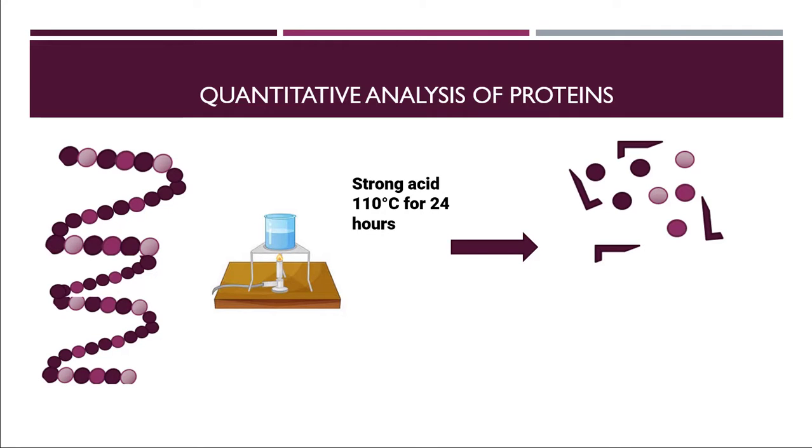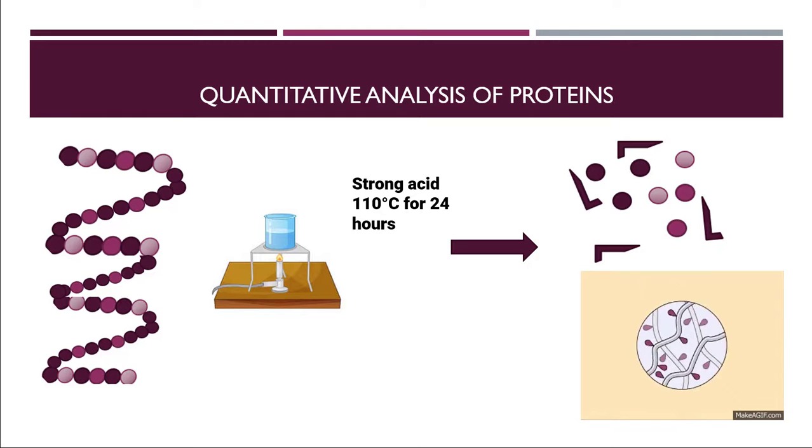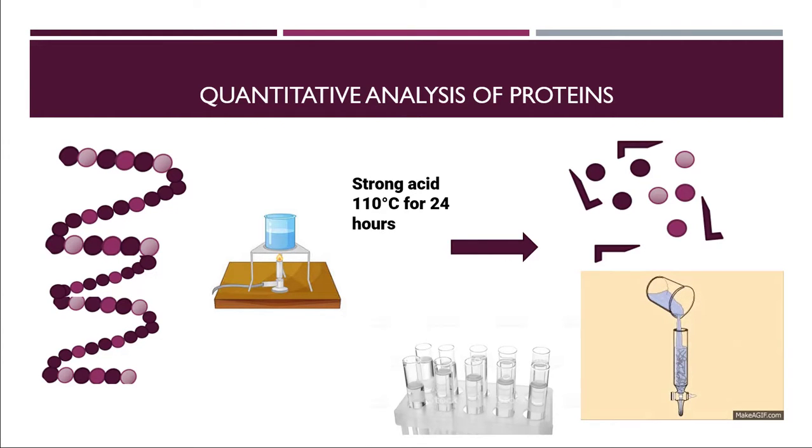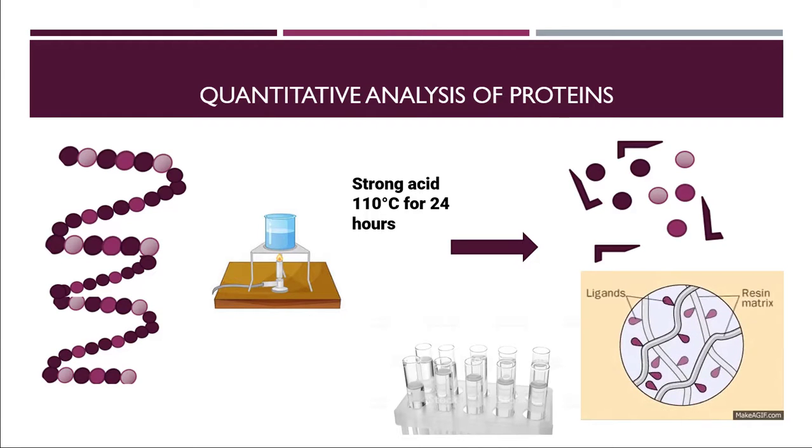For the purification process we will use ion exchange chromatography. By this way we will separate the debris from the amino acids. Then we will have a group of test tubes containing different quantities of proteins in it.